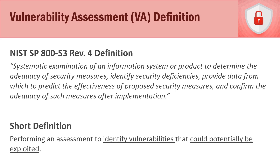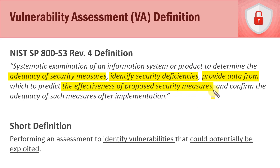is the systematic examination of an information system or product to determine the adequacy of the security measures that are in place, to identify any security deficiencies within that information system or product, to provide data from which to predict the effectiveness of proposed security measures, and lastly, to confirm the adequacy of such measures after implementation. We're looking at adequacy of security measures, identifying security deficiencies — which we call vulnerabilities — the potential effectiveness of proposed security measures, and long-term adequacy of measures we put in place.